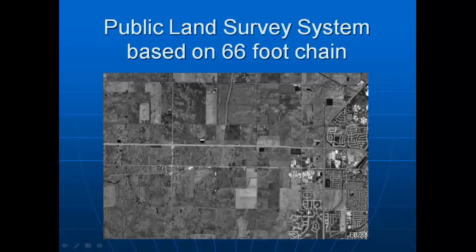The significance of the 66-foot chain can be seen in aerial photos of the Midwest and western states, where land is divided into one-mile-by-one-mile squares. Those lines were laid out in the early 1800s when Illinois was being divided into one-mile sections using the 66-foot Gunter's chain. Someone was walking these distances, laying that chain end to end eighty times to go one mile.